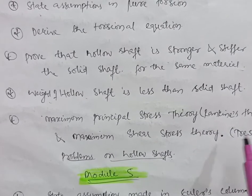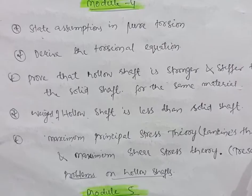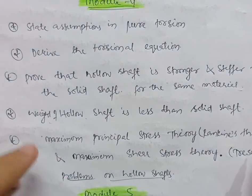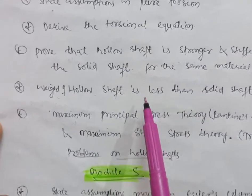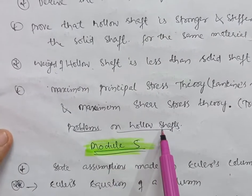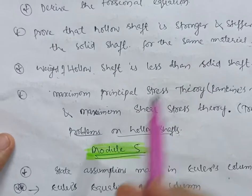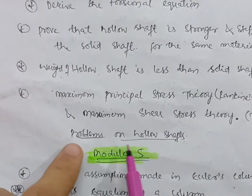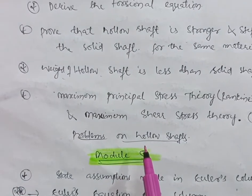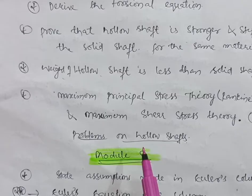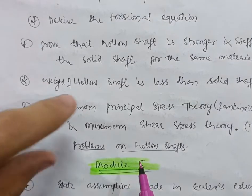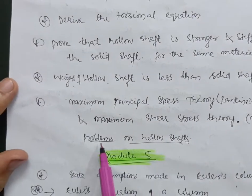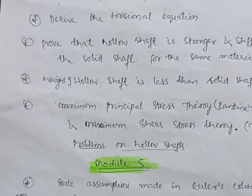Out of these theories, it is your choice, but I prefer you go through the hollow shaft derivation as it will be easier to do problems on hollow shafts based on that derivation. Even if you cannot fully solve those problems, at least write down the given data and perform basic calculations — knowing the derivation will help you attempt the problems on hollow shafts.